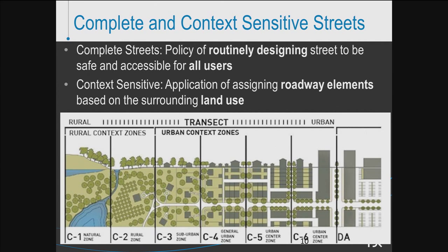This update of the MTP will consider complete streets and context-sensitive streets as part of the design of street types. Complete streets refers to the design of streets for all users — vehicular, bikes, pedestrian, and transit. Context-sensitive design considers the surrounding land uses that a street corridor traverses. The notion that one street type fits all doesn't apply anymore. A street type may traverse from an urban environment to a suburban to a rural area, and that same street type has different qualities and characteristics for addressing the adjacent land use. The new MTP will be considerate of those kinds of things.